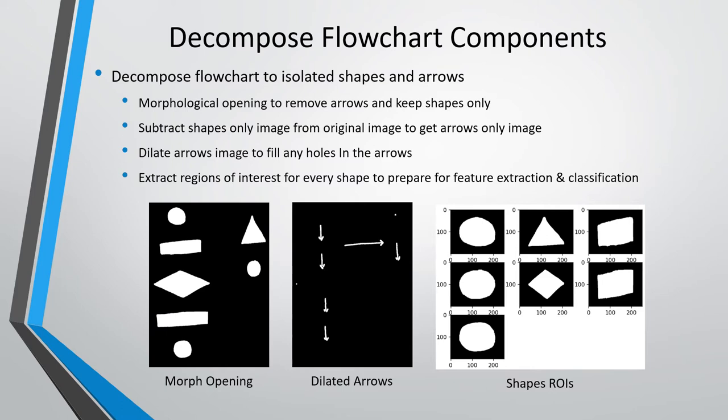The next step is decomposing the flowchart into shapes and arrows. The arrows can be thought of as thin bridges connecting the different flowchart shapes to each other. Therefore, morphological opening will be used to remove the arrows and isolate the shapes. Now that I have the isolated shapes, I subtracted the isolated shapes from the original image to get an image containing the arrows only. Due to the arrows being very thin, I dilated the arrows to make sure that all the holes in the arrows are covered.